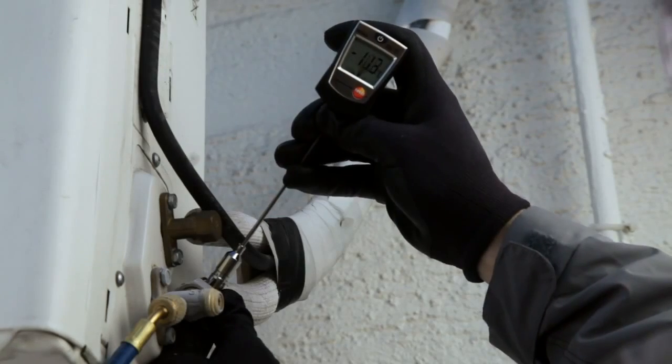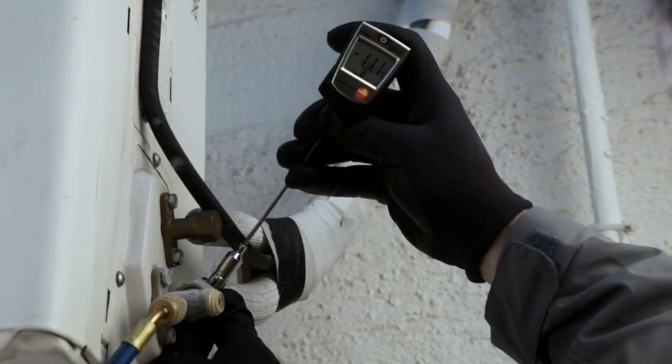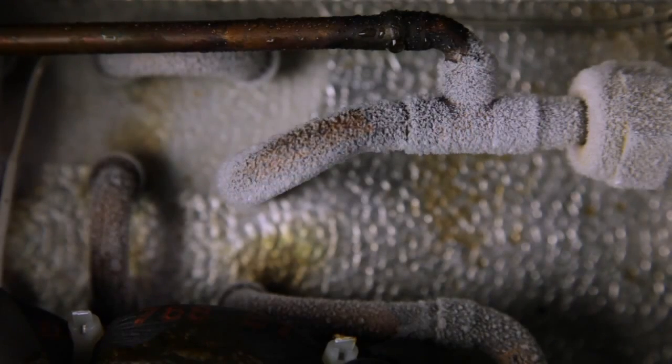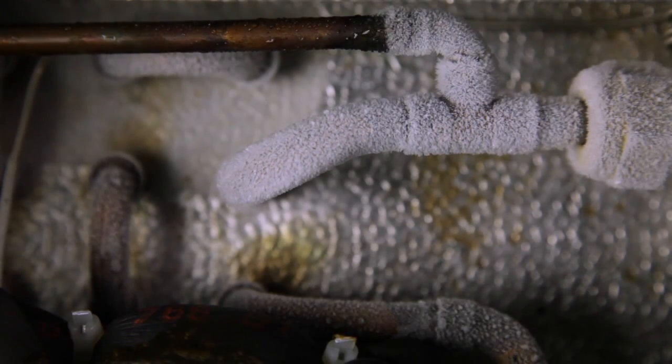The correct refrigerant filling quantity and the exact determination of superheating and sub-cooling are crucial parameters. If these are incorrectly adjusted, the system has higher energy costs and a lower refrigeration performance than originally intended.